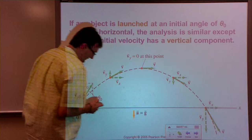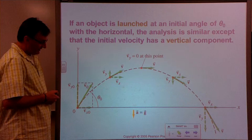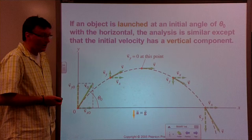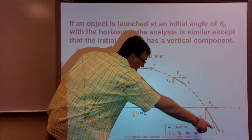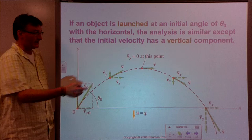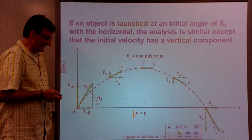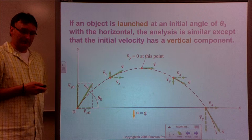The only difference at impact versus launch is that the velocity will be in the opposite direction — ignoring air resistance. The magnitude of the velocity at impact equals the magnitude at launch. And the other useful piece of information is that at the top of its trajectory, the velocity in the y direction is zero, which is useful when analyzing these problems.